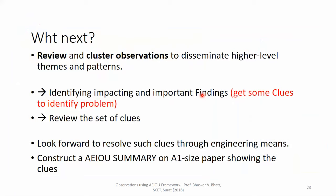After doing this, we need to have a round of review and then cluster all these observations. We then disseminate higher-level themes and patterns — going from general observations down to a specific set of requirements that will define another round of observation. We need to identify the impacting and important findings, which we call clues, and these clues form sets among the AEIO framework, over which we need to have a review.